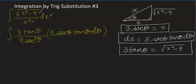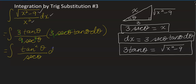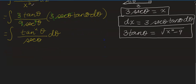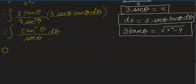Cleaning up the integral, we get the integral of tangent squared theta over secant theta dθ. Now using the identity tangent squared theta equals secant squared theta minus 1, we substitute to get the integral of (secant squared theta minus 1) divided by secant theta dθ.